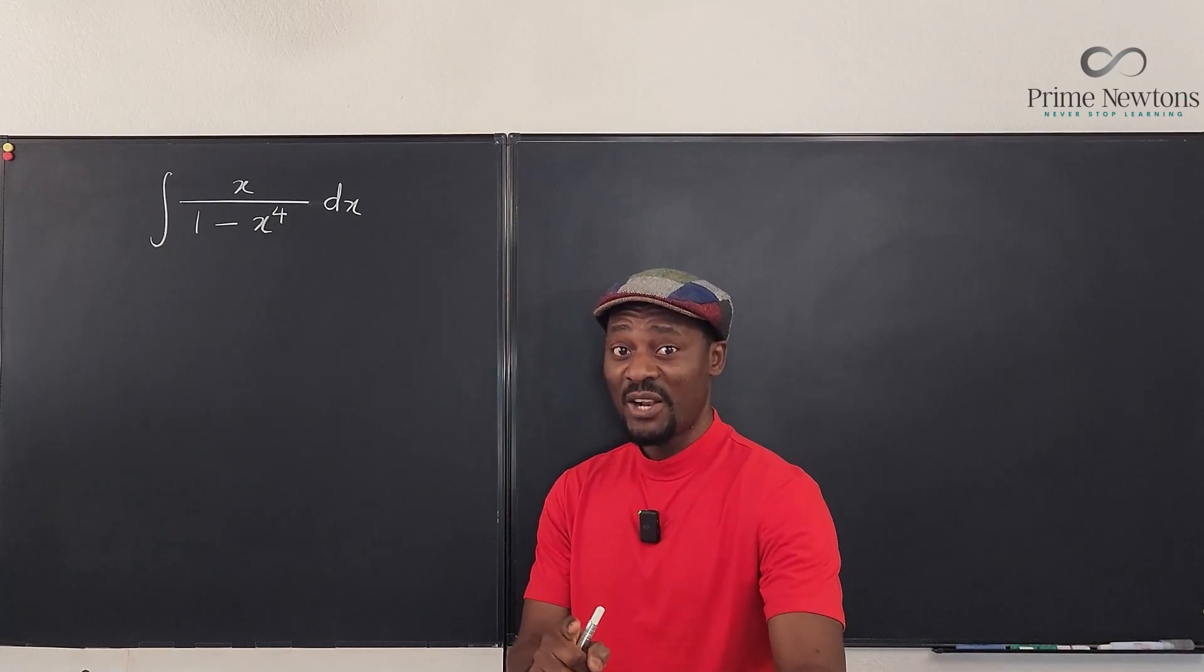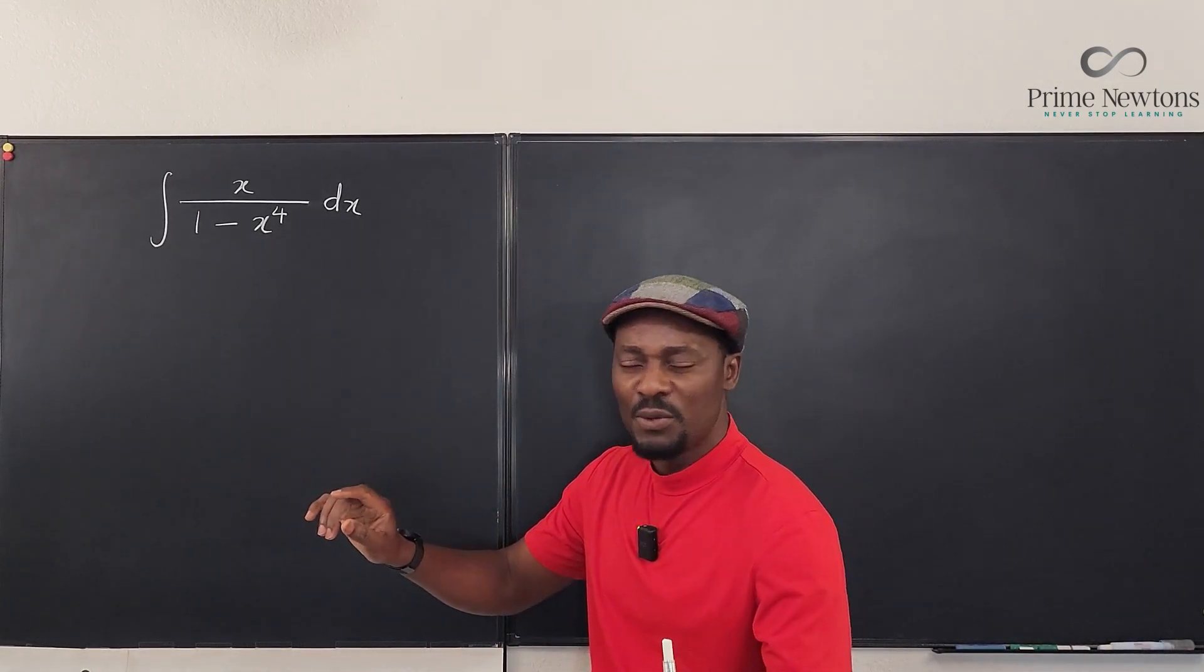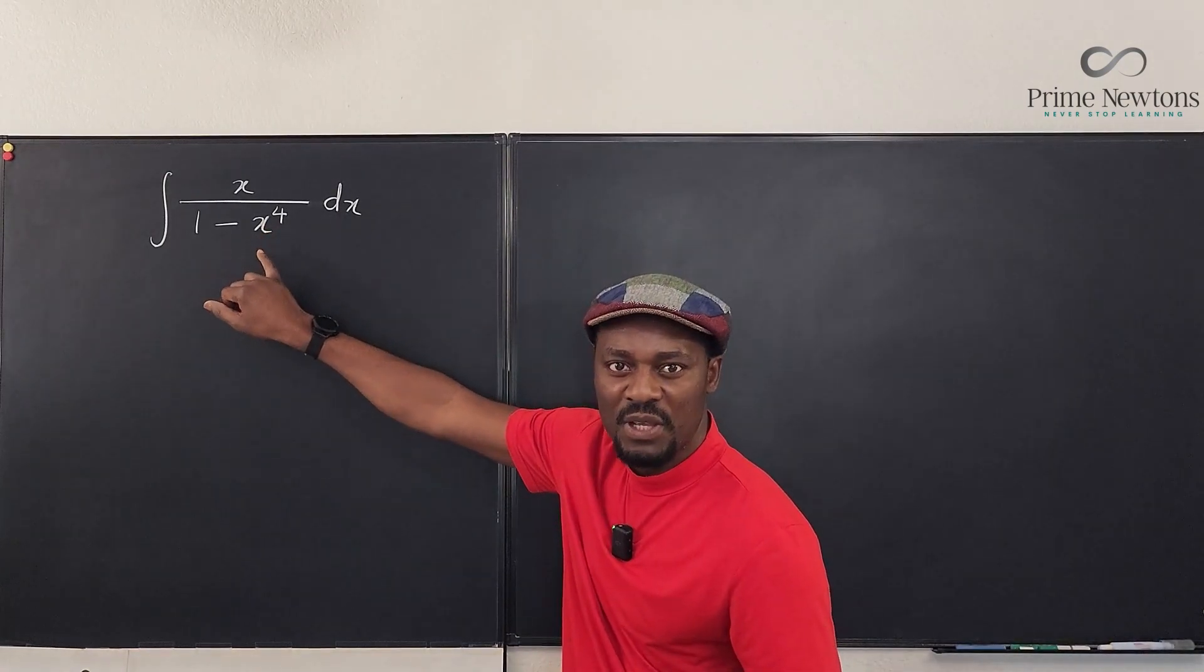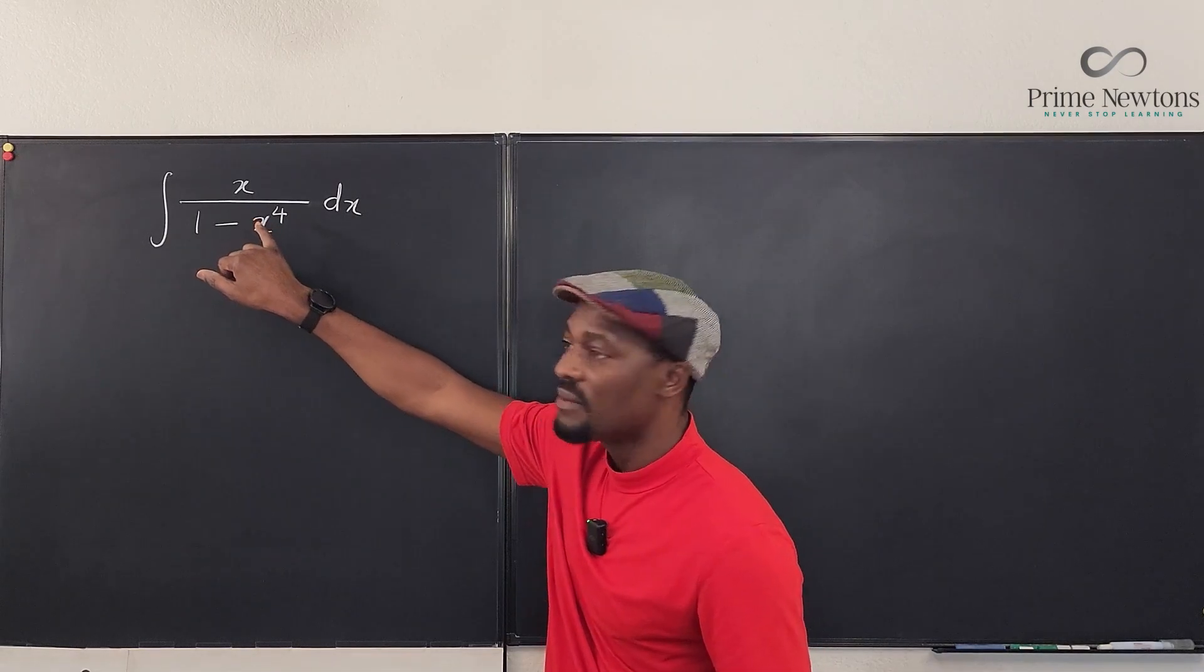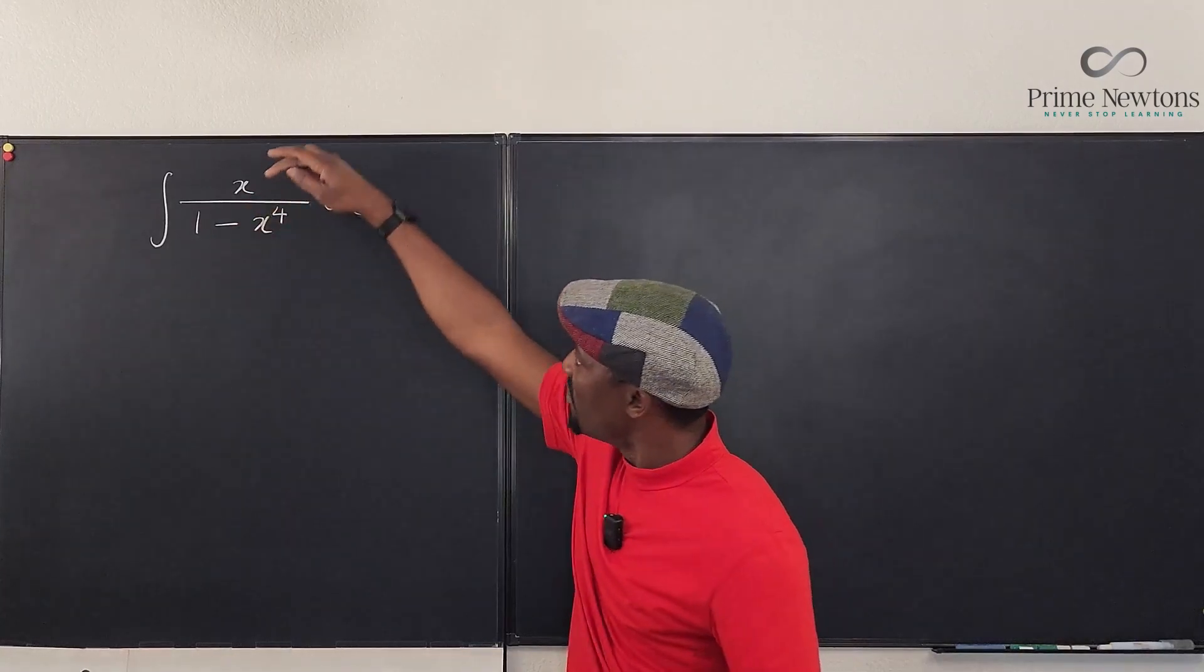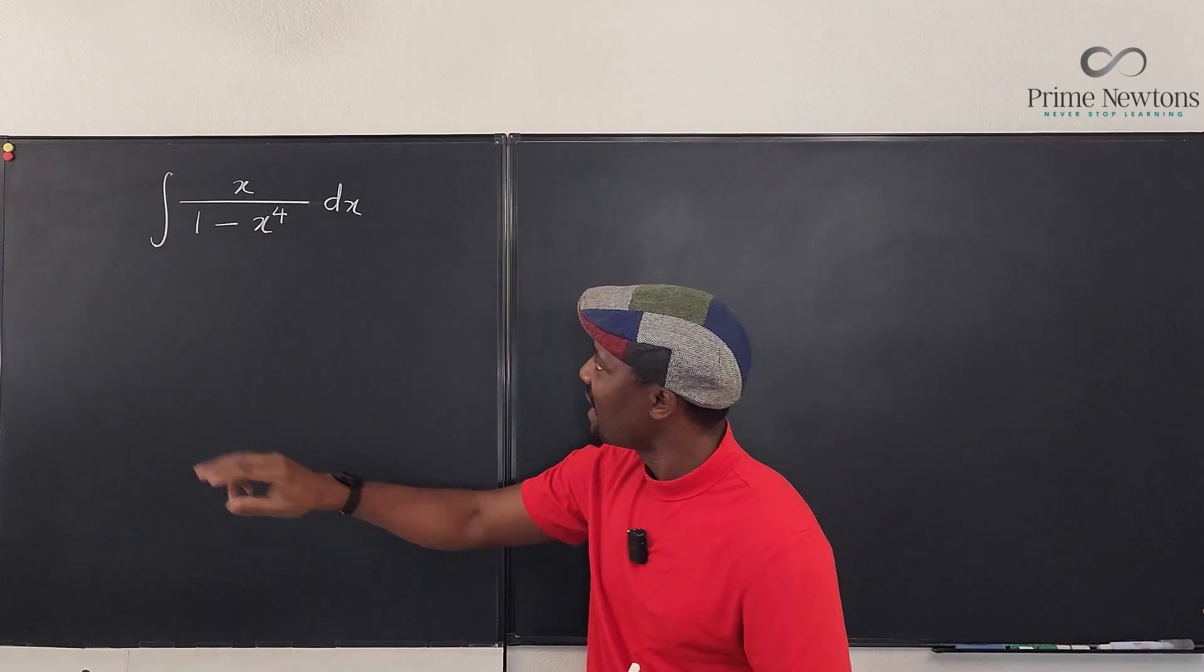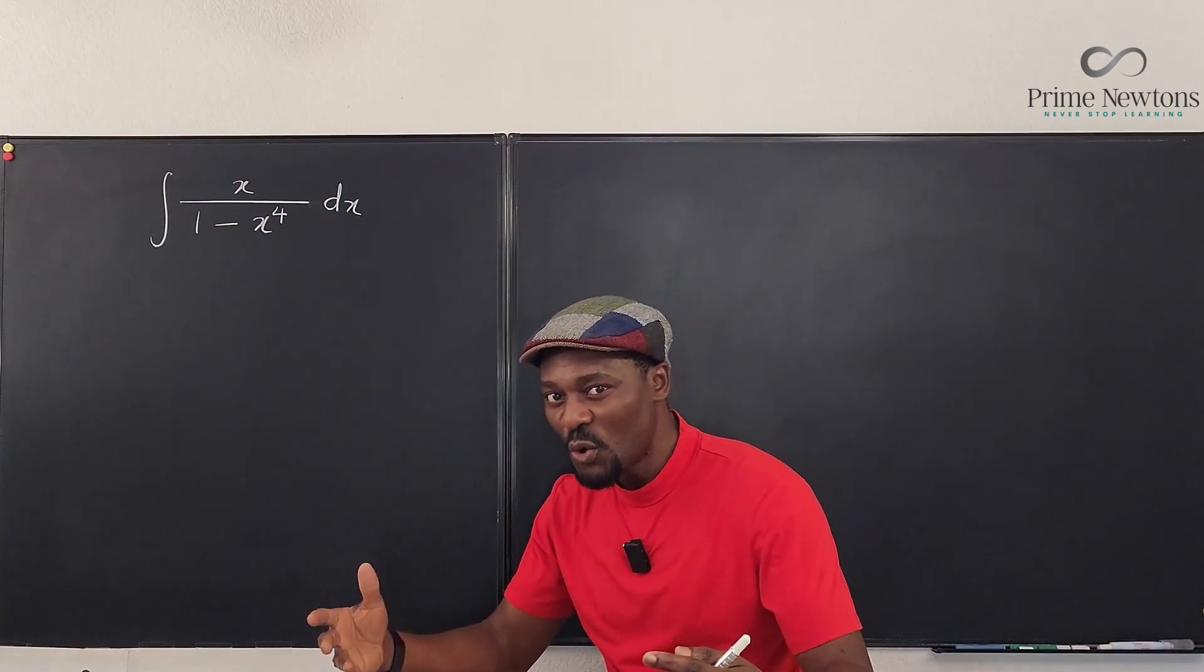Now you might be thinking as a good calculus student that if I need to do a u-substitution, I don't want to say let u be x to the fourth because the derivative of x to the fourth is 4x³. But this is not x³. You always want to do a u-substitution that gets rid of xdx.